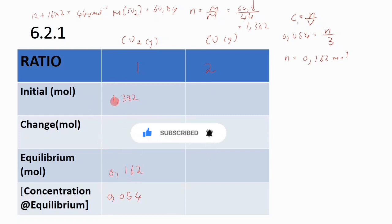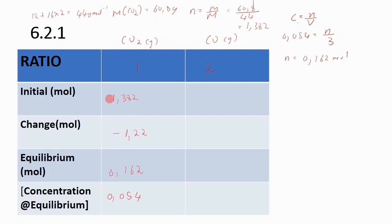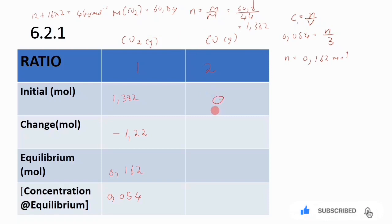Now that we have equilibrium moles and initial moles, we find the change: 1.382 − 0.162 = 1.22. I indicate a negative here to show that reactants are being used up as the reaction proceeds. For carbon monoxide: since the container is sealed, initially there is no product, so we put zero for the initial moles of CO.